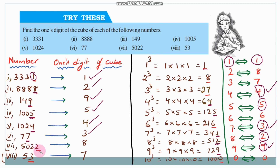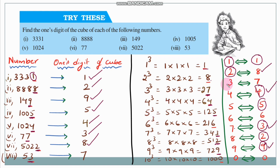For 5022: the units digit is 2. Since 2³ = 8, the units digit of the cube is 8. For 53: the units digit is 3. Since 3³ = 27, the units digit of the cube is 7. Understood, children?